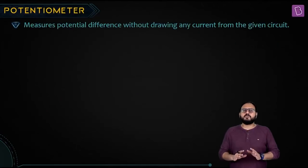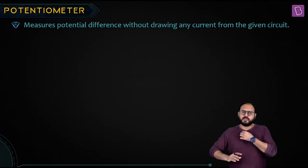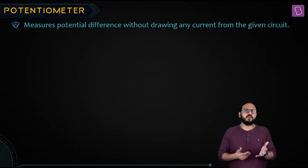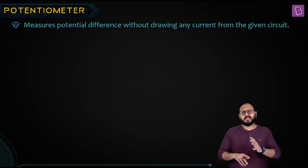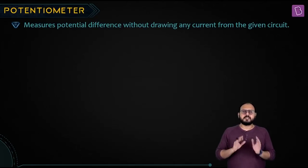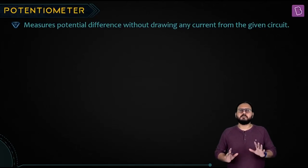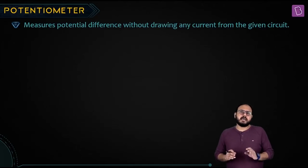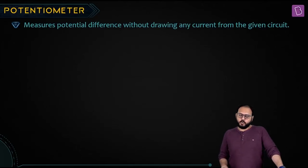Potentiometer — a beautiful electrical instrument used for many purposes: to find the unknown EMF of a cell, unknown internal resistance of a cell, and to compare EMFs. Potentiometer is an examiner's favorite pet.